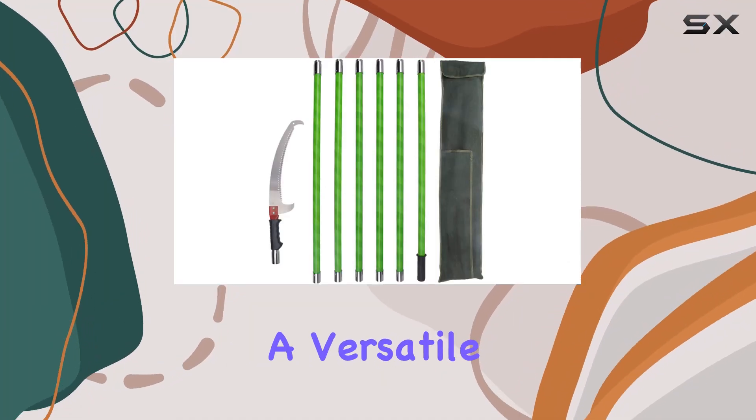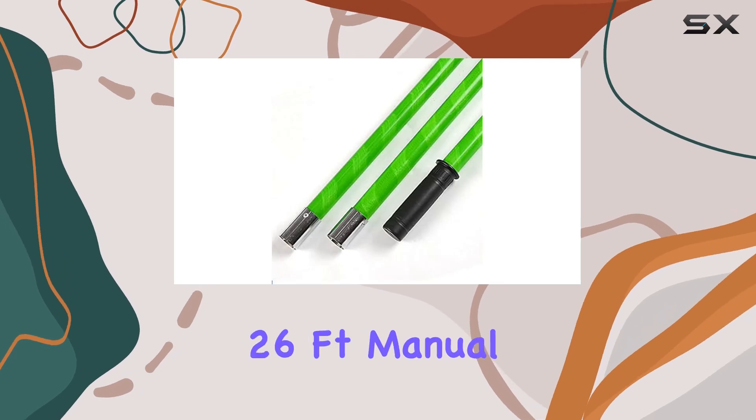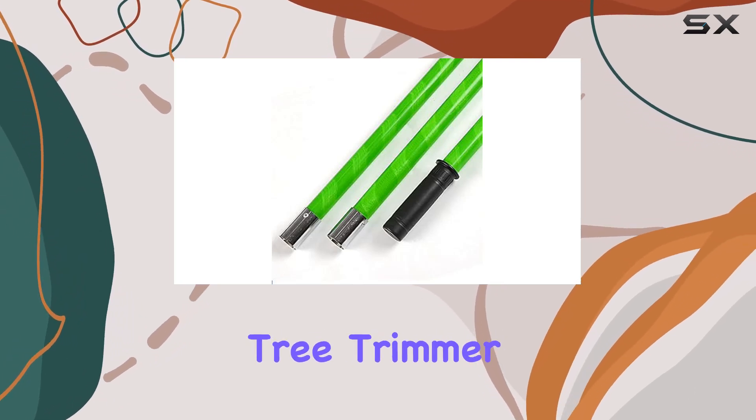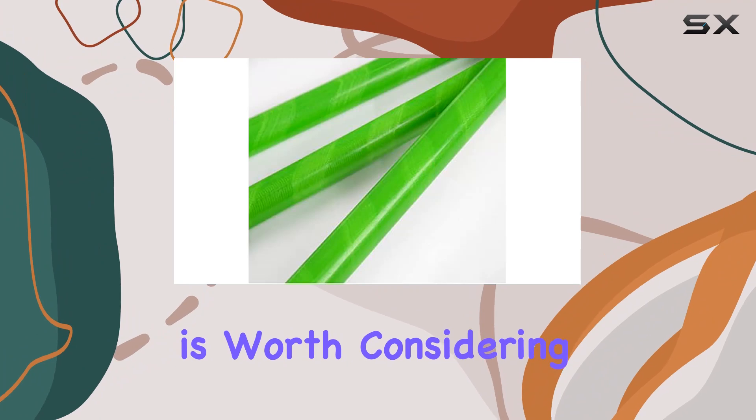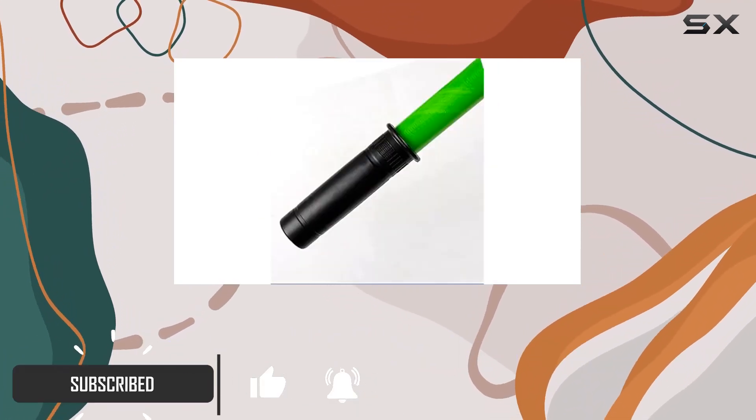If you're in the market for a versatile and reliable tool to manage those hard-to-reach branches, the 26-foot manual pruner cutter tree trimmer pole extension is worth considering. This tool stands out with its impressive 26-foot reach, which allows you to trim and prune high branches without the need for a ladder.